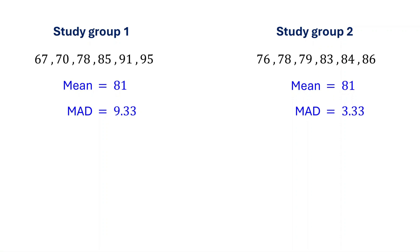This makes sense because if you look at the scores of the second group, they are close to each other, while the scores of the first group are much more spread out.